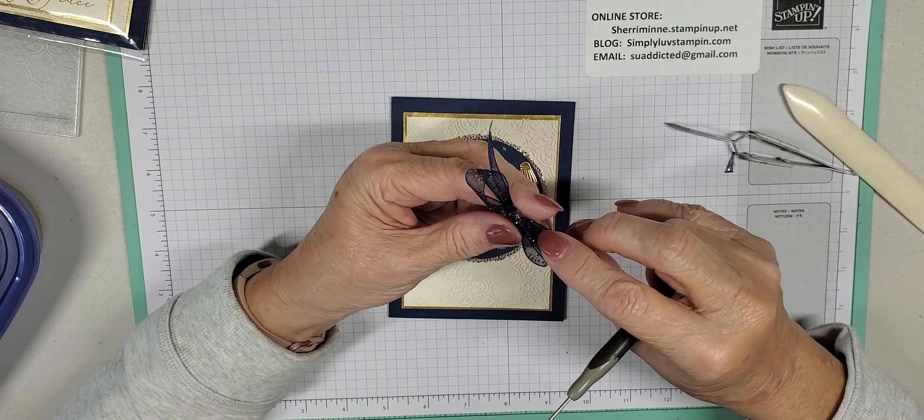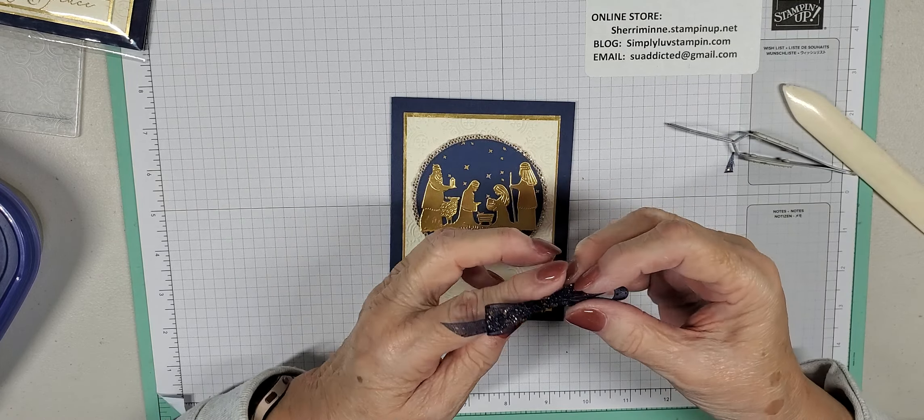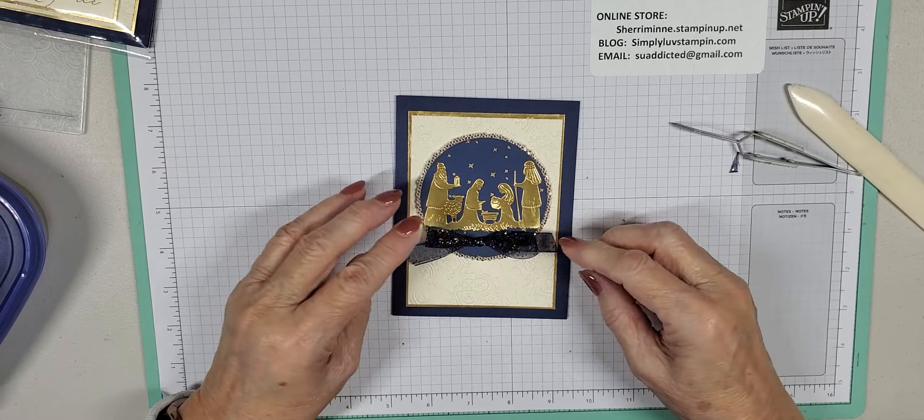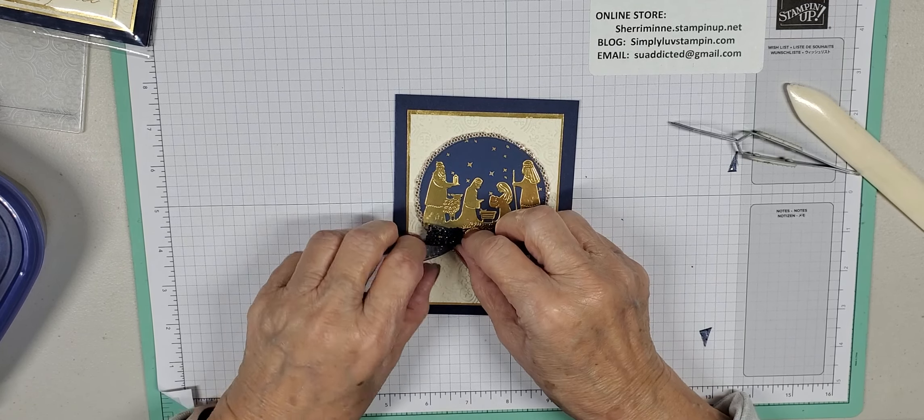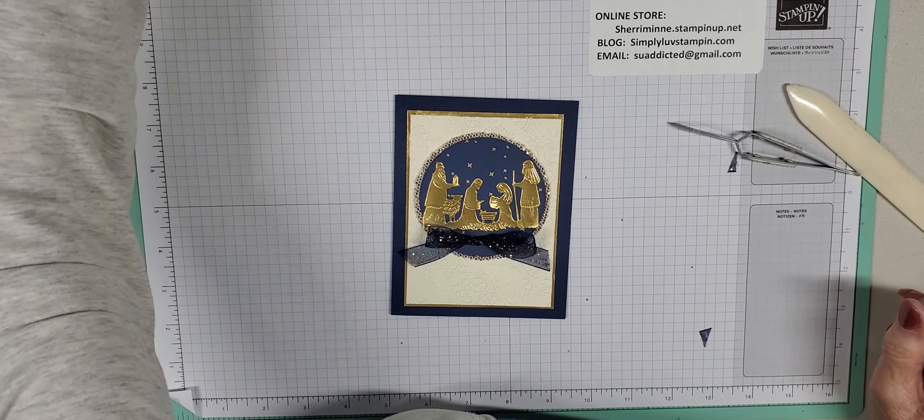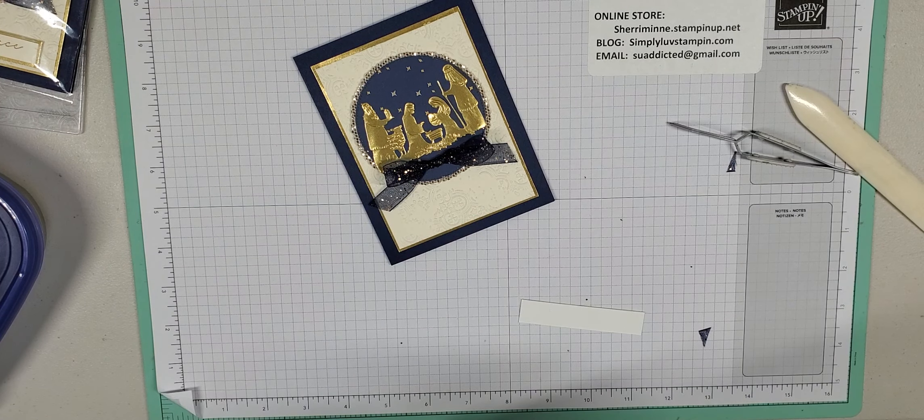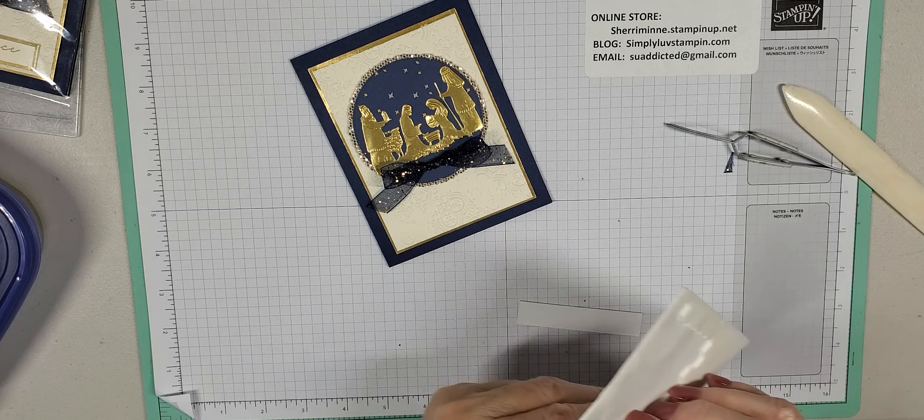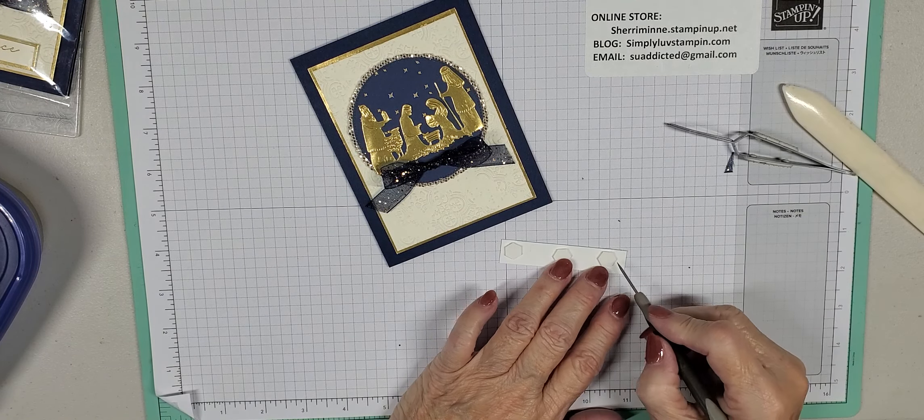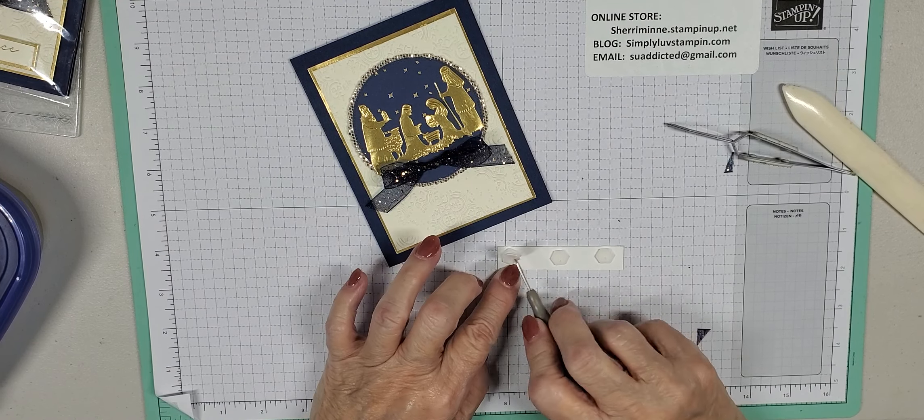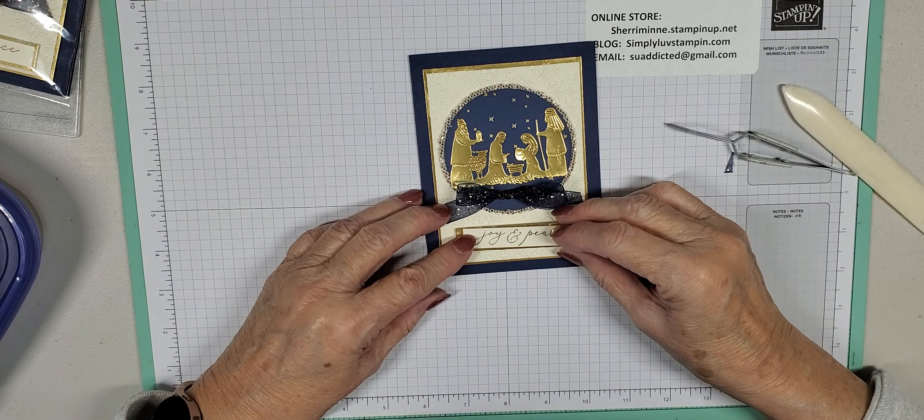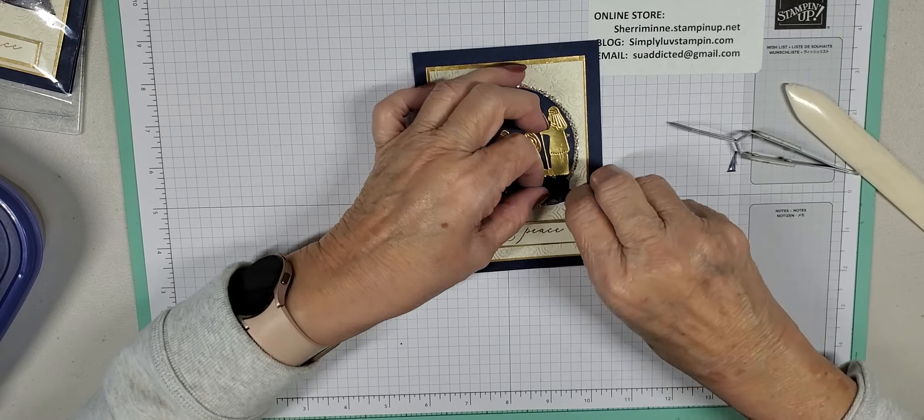This card does go together pretty quickly once you get everything cut out. Then this we're just going to put kind of along the bottom here. Then we will take our dimensionals - I'd rather have the large ones than the small ones. I usually put three on a long strip like this. This is going to be a little bit longer of a video because I'm out of practice. We will place this kind of centered down here at the bottom. And there you go.